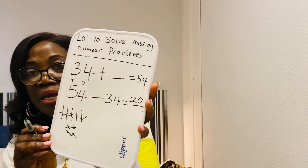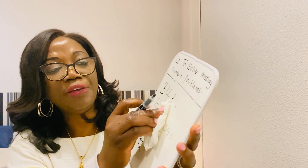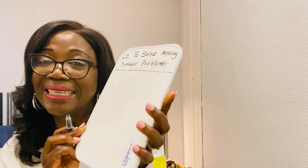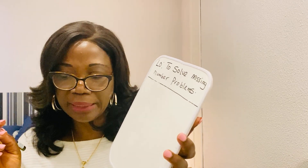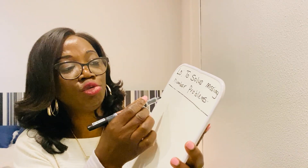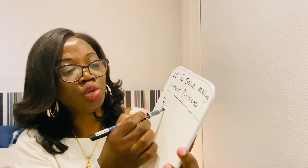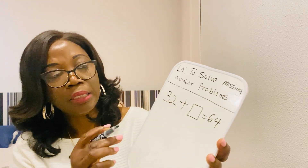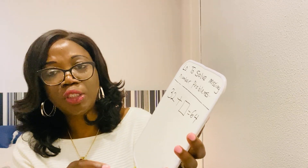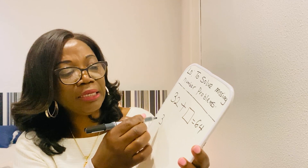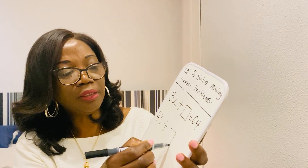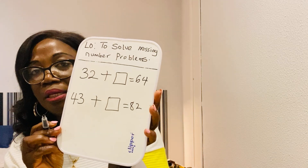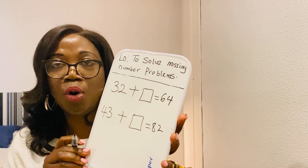Can you see that it's very easy? I am going to give you some questions to do yourself and you can send them to me. Those who are in my class — your parents are going to send it to me. So I'm going to write these questions for you to solve. 32 plus something gives me 64. And another one: 43 plus something gives me 82. Pause the video and do it. Let me know if you still need more help with this.